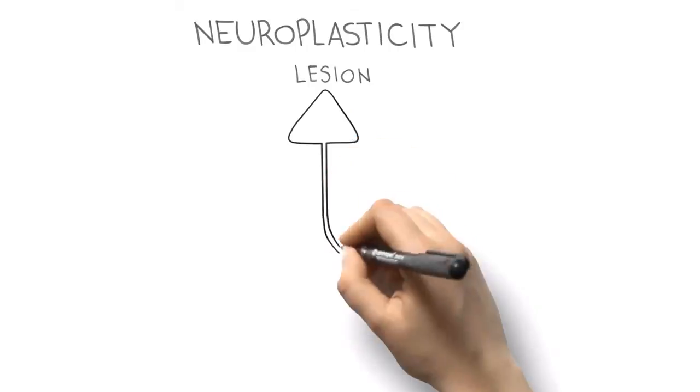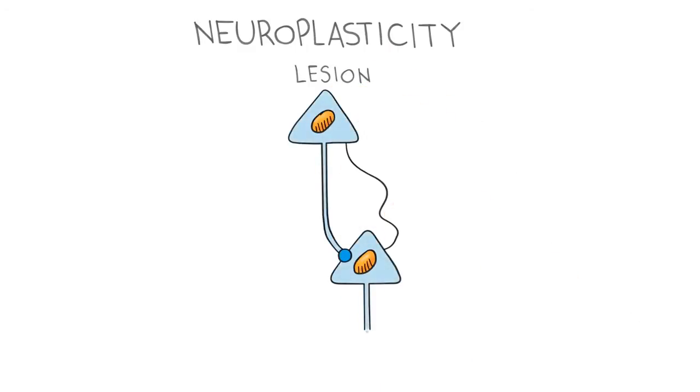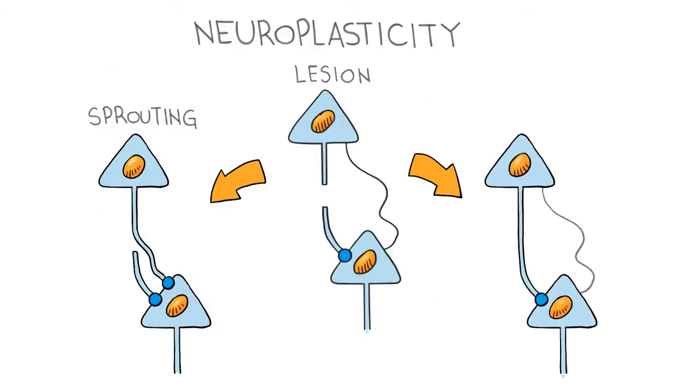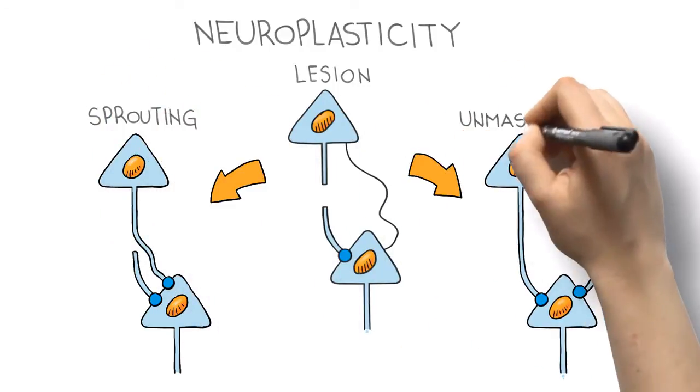This phenomenon, called neuroplasticity, allows existing neural pathways that are inactive or used for other purposes to take over and carry out functions lost due to injury. Researchers also claim that our brain is capable of changing even years after a stroke.